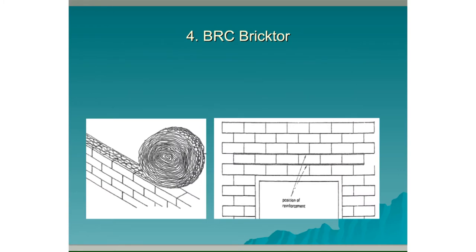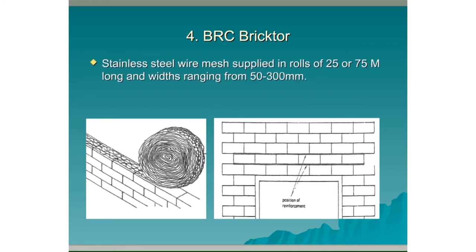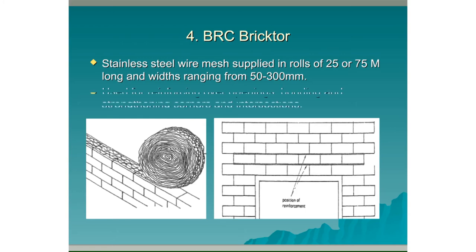Brick Tor: Stainless steel wire mesh supplied in rolls of 25 or 75m long and widths ranging from 50 to 300mm. This is probably one of the most common types of reinforcing used on site today. It is used for reinforcing over openings, bonding and strengthening corners and intersections.